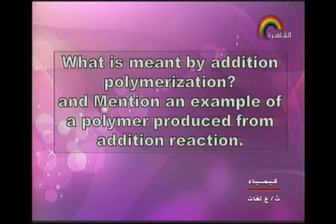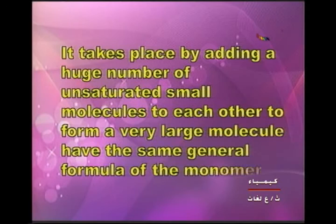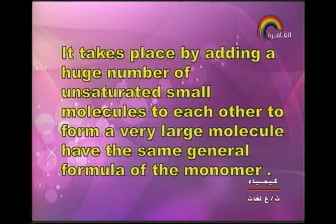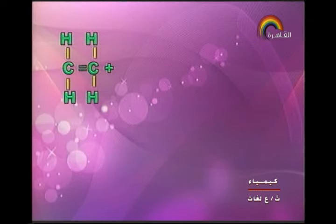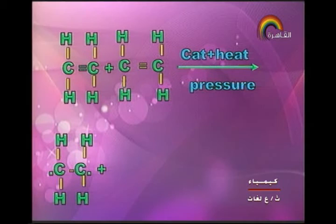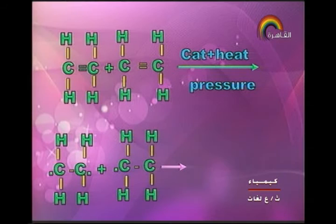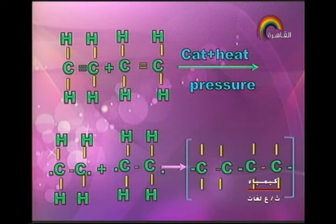Next type of question: what is meant by addition polymerization, and mention an example? Addition polymerization takes place by adding a large number of unsaturated small molecules to each other to form a very large molecule having the same general molecular formula as the monomer. Example: ethylene reacts with another ethylene molecule in the presence of catalyst, heat, and pressure — the double bonds are broken into two electrons per carbon atom and they combine through polymerization forming polyethylene.